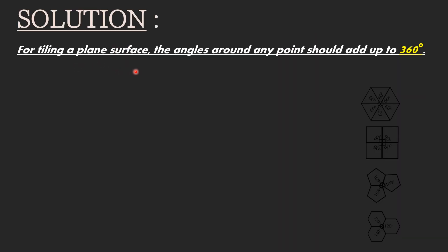Solution: For tiling a plane surface without gaps or overlaps, the angles around any point should add up to 360 degrees. Let us consider each of the answer options.